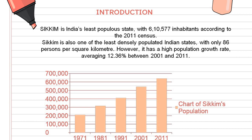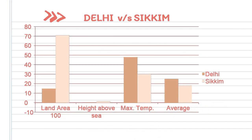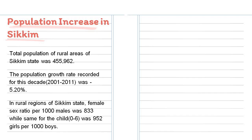Here is a graph showing the increase in population of Sikkim from the year 1971 to 2011. Moving on to this graph, it briefs the difference in other characteristics of Delhi and Sikkim.